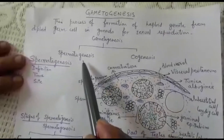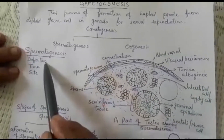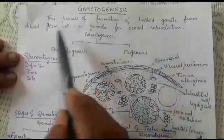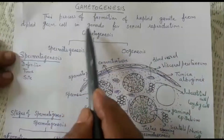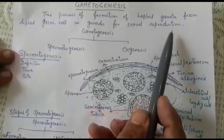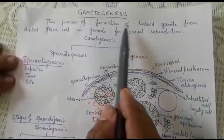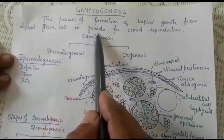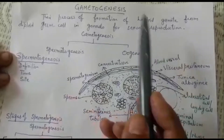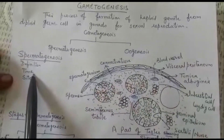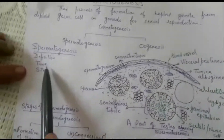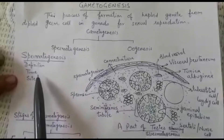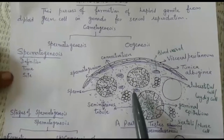First we will study spermatogenesis. Spermatogenesis is the process of formation of haploid sperm from diploid sperm mother cell in testes for sexual reproduction. In majority of animals there is a particular time for spermatogenesis, but in men and domestic animals the process occurs throughout the year.